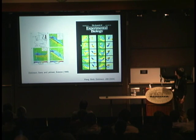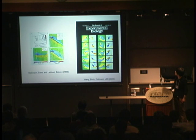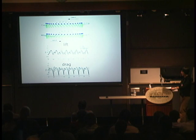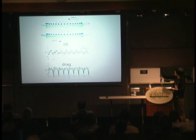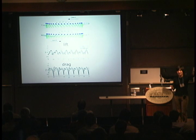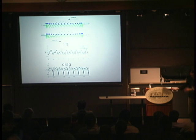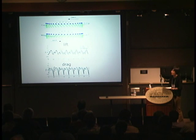Here's one example: the computed vorticity for a back-and-forth moving wing versus the experimentally measured vorticity. We can also compare the forces — the computed forces versus the experimentally measured thick dashed line. We can do this for many cases to get a sense of how well this two-dimensional modeling works, and how close it gets to the actual forces on a real 3D wing.